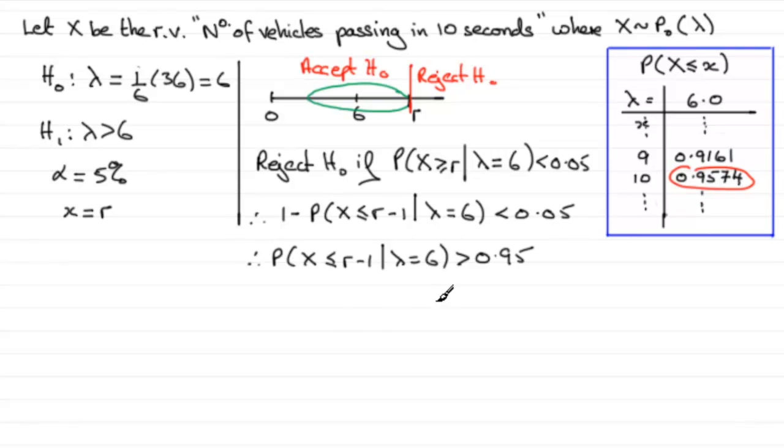So, we can say that from tables, R minus 1 must be the 10. So we've got R minus 1 must be greater than or equal to 10. And obviously if we add 1 to both sides, R must be greater than or equal to 11.